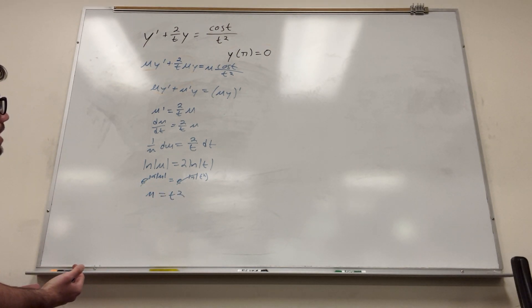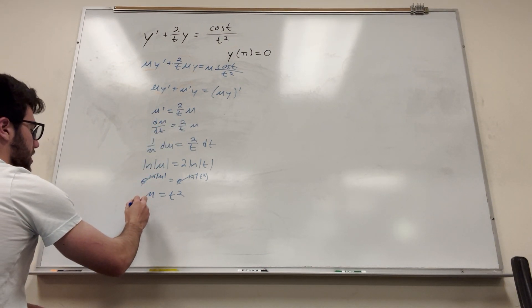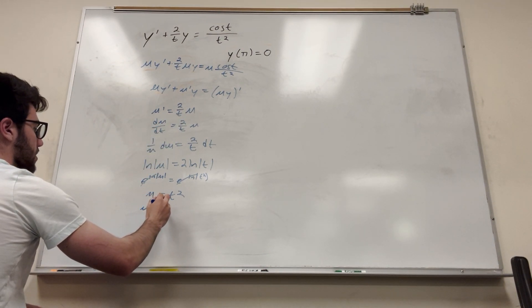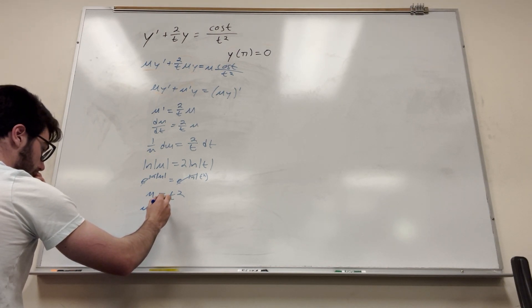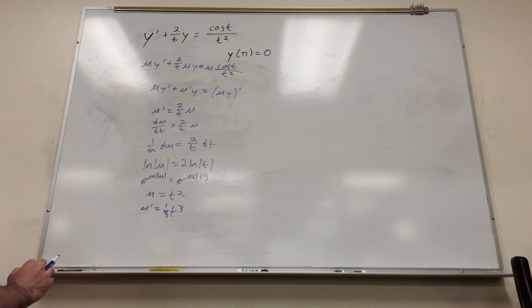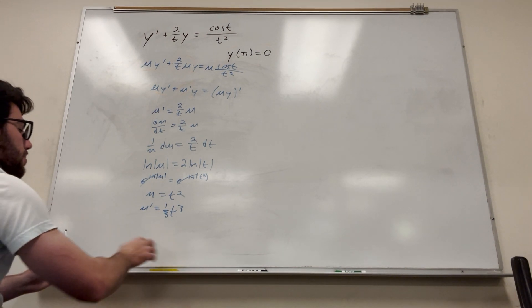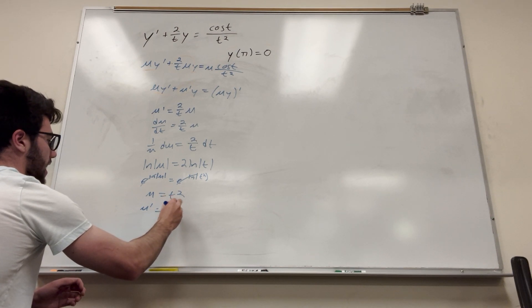And then boom, there you go. That's where you have mu is. So we can test to make sure this works. So we have, if we take the derivative of mu is equal to, so it'd be, right? It'd be, why am I dying right now? I'm very dumb.